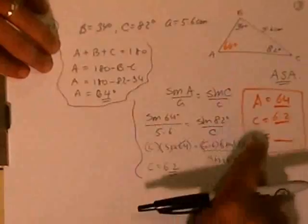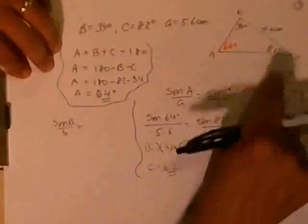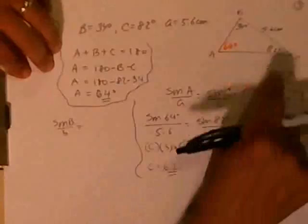Two significant figures, little c is 6.2. Let's find little b now. Sine of angle b over little b is equal to, I like to use this, not sine of C. I would like to use this original one, because they give you this, instead of looking for the approximation, we'll use the actual one that they gave you.